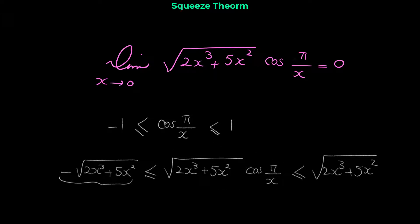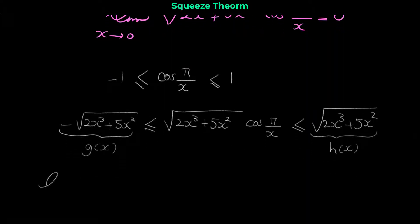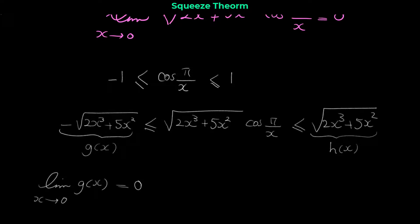Let's name the left function g(x) and the right function h(x). The limit of g(x) — the negative radical — when x approaches 0, is 0. Why? Because if you plug in 0 for x, everything becomes 0. And also the limit of h(x) when x approaches 0 is 0.